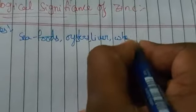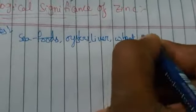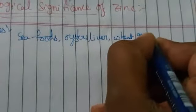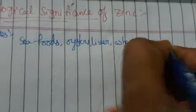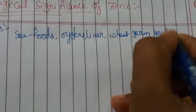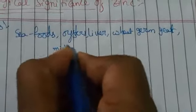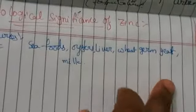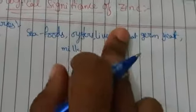Other sources include wheat, jam, yeast, and milk. So these are the dietary sources required for zinc.